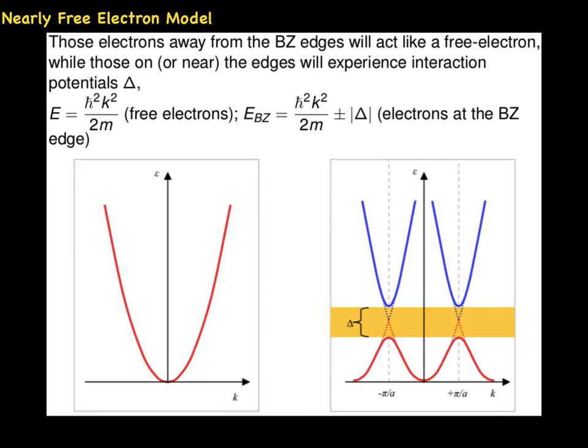Those electrons away from the Brillouin zone are entirely free electrons and the corresponding band structure is the left side figure. Energy is proportional to the square of k as we learned from the free electron model. Now these electrons near the edges will experience interaction potentials δ. The corresponding energy values is the term similar to free electron plus minus the interaction potential δ.